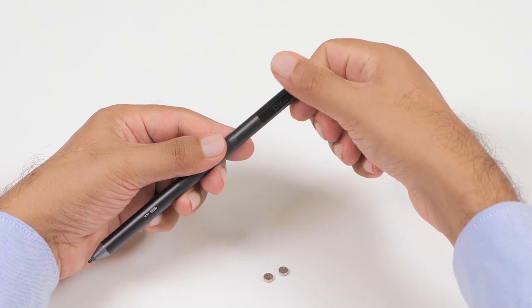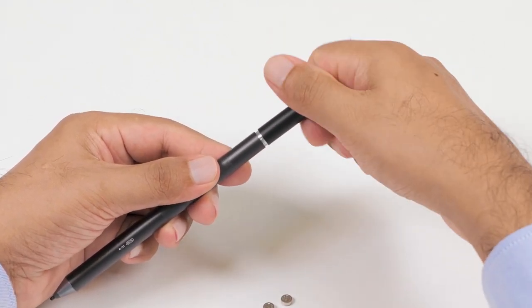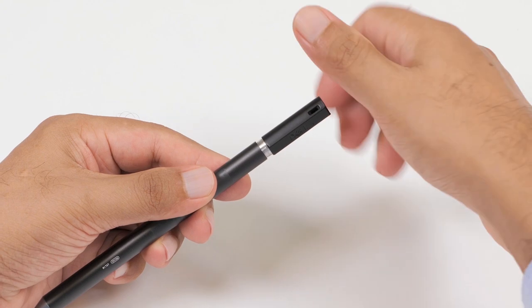Before using the pen, you need to install the batteries. To do this, twist off the top of the pen by rotating it counter-clockwise.